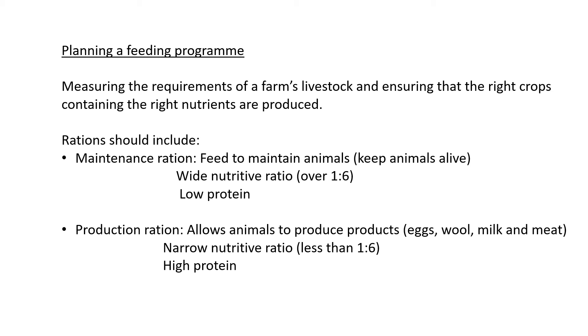A narrow nutritive ratio means we're giving them a high protein diet—less carbs, less fats, fewer vitamins and minerals, but more protein. These animals need to produce something, so they need more nutrients than they normally need, specifically protein to produce whatever products they need to make.